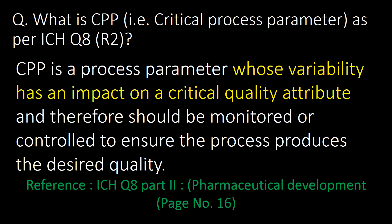What is CPP, that is critical process parameter, as per ICH Q8 R2? A CPP is a process parameter whose variability has an impact on a critical quality attribute and therefore should be monitored or controlled to ensure the process produces the desired quality.